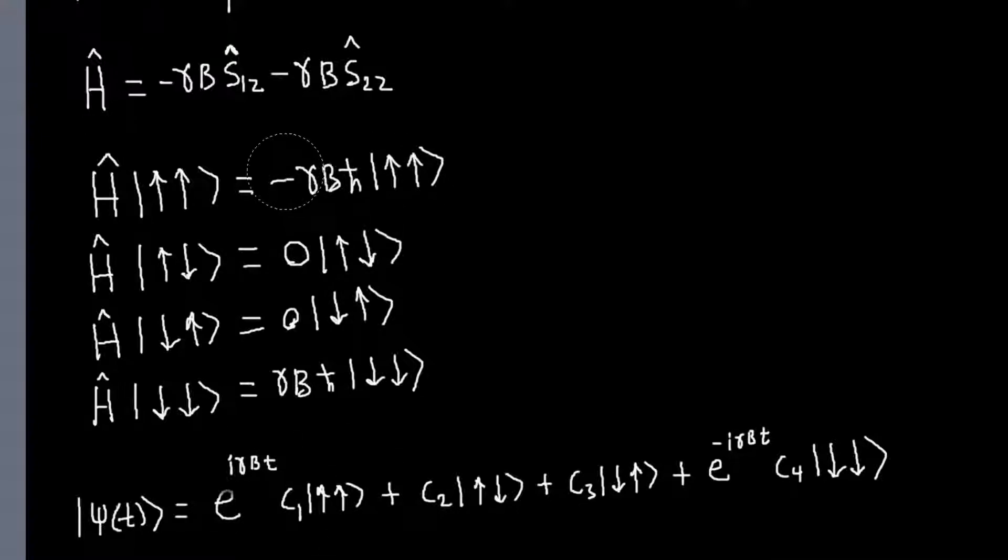So, here I've replaced it with minus gamma b h-bar, and then in these two terms, I replace it with 0, so I have an e to the 0, which is just 1, so those exponentials go away. And then in this one, I replace it with gamma b h-bar.